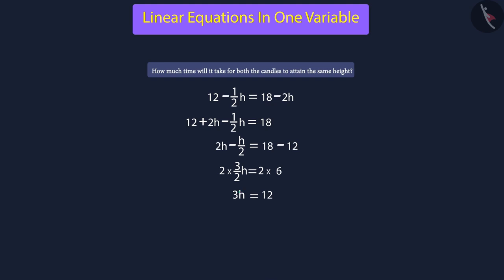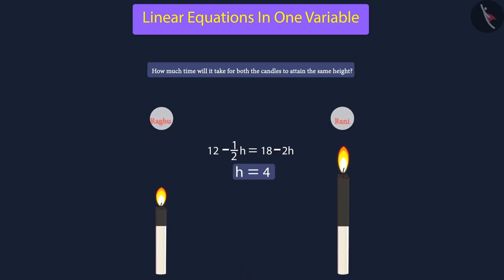Now, we shall divide both sides of the equation by 3 to remove the 3 with variable h. The value of h is found as 4, which explains that after 4 hours, both the candles will be of equal height.